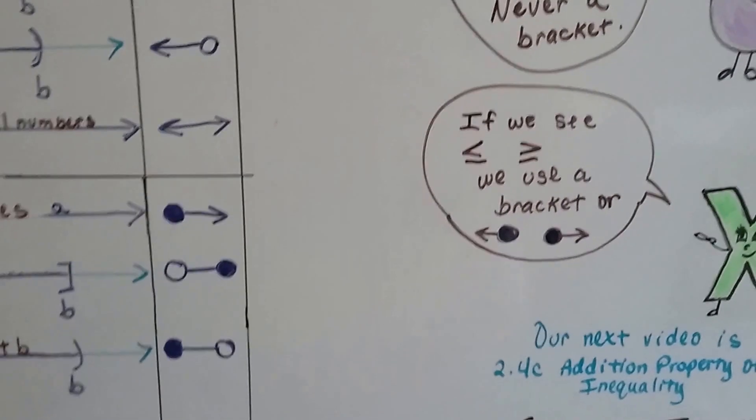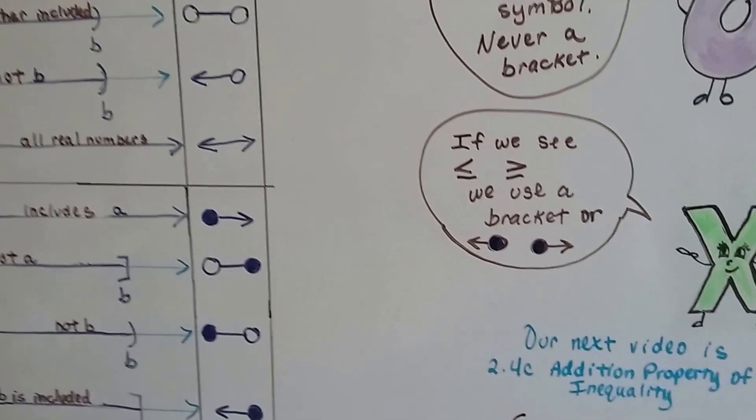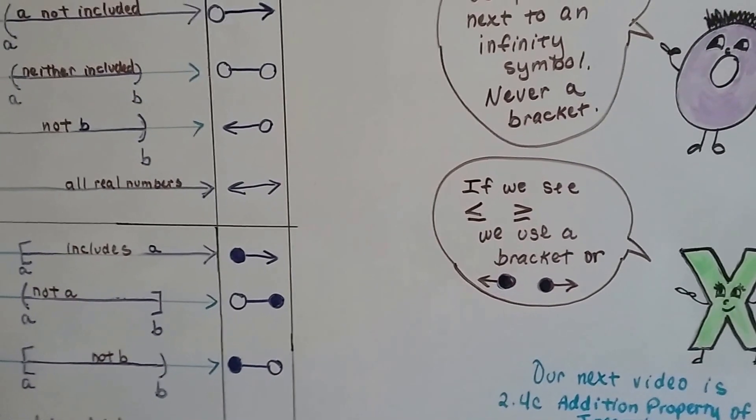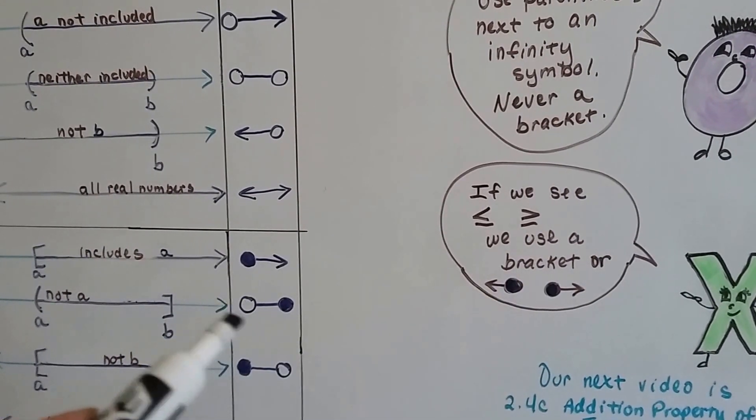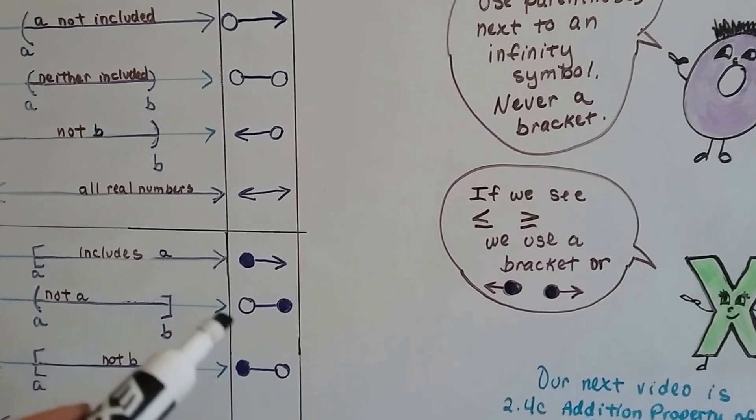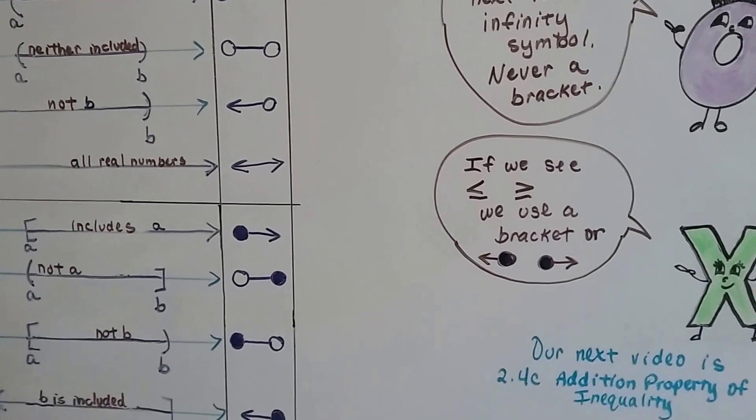So, I know this can be confusing, and if you can find a way to help you remember that the filled-in dot means it's included and the open one is like a 0, so it's not included. That might help you.